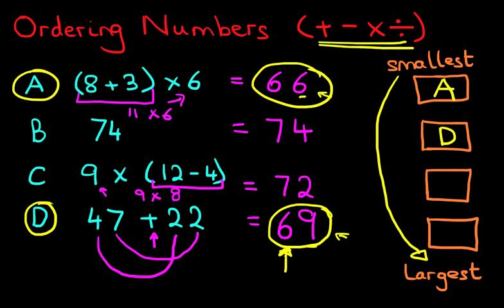That leaves the two numbers which begin with 7. They've got 7 tens each. Look at the units. We've got 4 here and we've got 2 here. Therefore, 2 is smaller than 4, and C is the next smallest number.